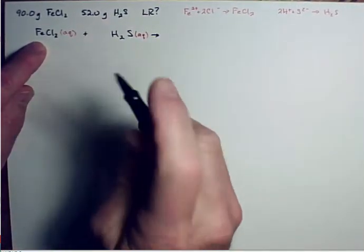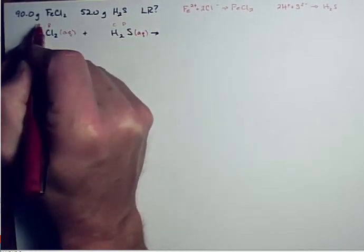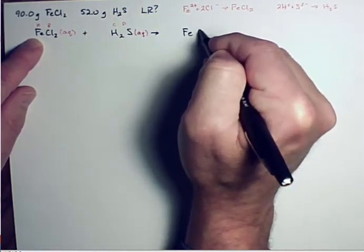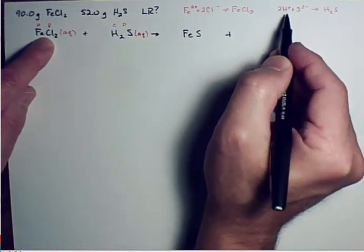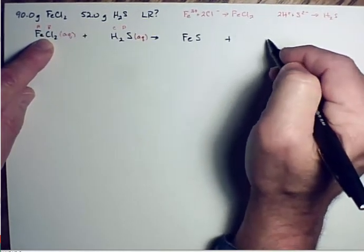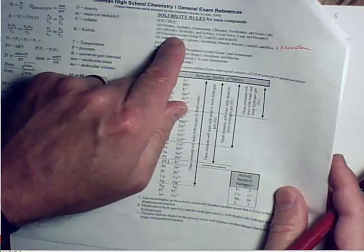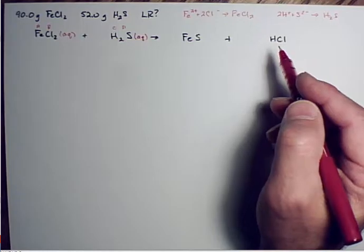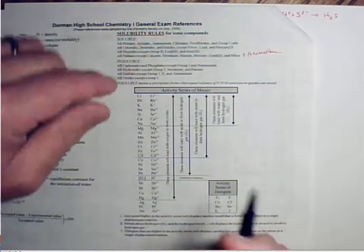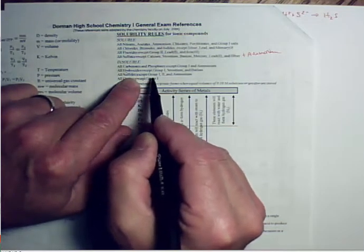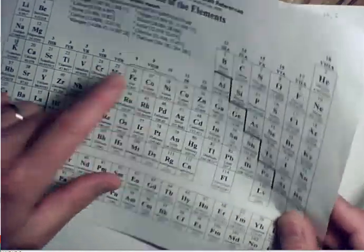We have two two-part compounds, so we do a double displacement reaction: the A part goes with D, and the C part goes with B. Fe combines with S to form FeS; hydrogen (the positive ion) combines with Cl to give HCl — hydrochloric acid, which is aqueous because chlorides are mostly soluble with no exceptions for hydrogen chloride. Then for FeS: sulfides are mostly insoluble. The exceptions are Group 1, Group 2, and ammonium — iron is none of those, it's a transition metal. So FeS must be a solid.